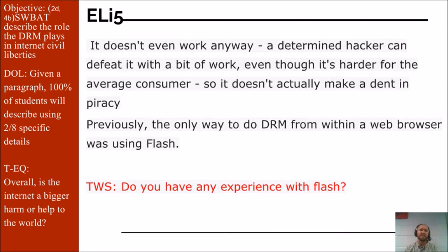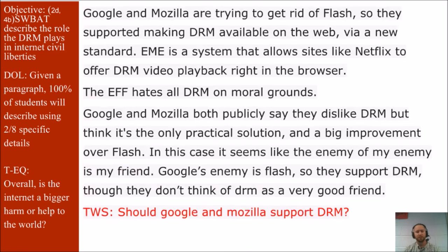Another legitimate criticism of DRM is that it doesn't even work. A determined hacker can defeat it with a bit of work, even though it's harder for the average customer, so it doesn't actually make a dent in piracy. Previously, the only way to do DRM from within a web browser was using Flash. Now that's what EME does — it allows you to protect audio or video right inside the web browser. Google and Mozilla are trying to get rid of Flash, so they supported making DRM available on the web via a new standard. EME is a system that allows sites like Netflix to offer DRM video playback right in the browser.